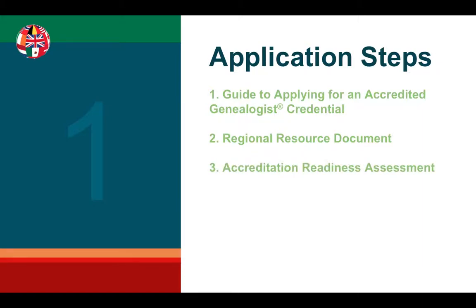Third, take the accreditation readiness assessment. This will help you self-assess whether your level of experience meets the minimum requirements to apply for accreditation, and it should be taken before you pay your Level 1 fees. Fourth, go through the four-generation project self-assessment. It's based on the rubric used to rate the four-generation project and it will help you evaluate the readiness of your own project.